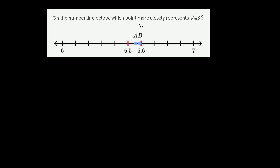On the number line below, which point more closely represents the principal root of 43? Or you could view it as the positive square root of 43. I encourage you to pause this video and just looking at this, try to approximate where A is and where B is. And let's think about which of those numbers is closer to the principal root of 43.